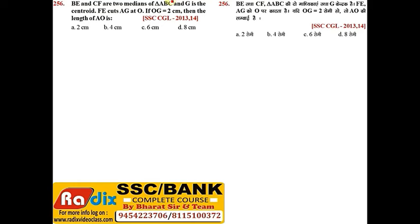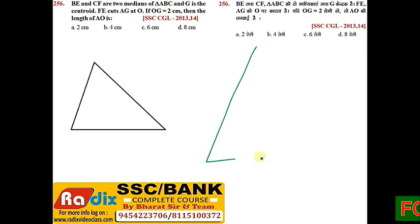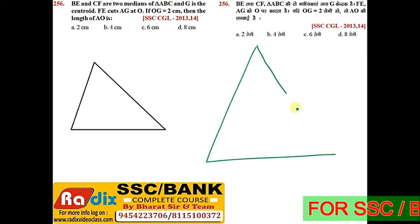P and CF are two medians of triangle ABC and G is the centroid. EF cut. Yes, this is a question. It's a big problem. Yes, it gets confused.